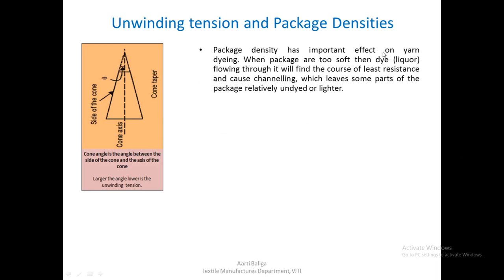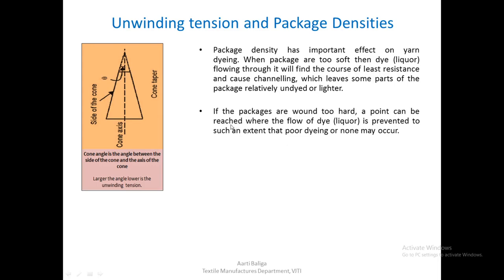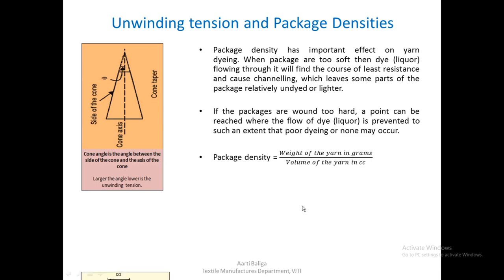Package density has an important effect on yarn dyeing. When packages are too soft, dye flowing through it will find the path of least resistance, causing channeling which leaves some parts of the package relatively undyed or lighter. If the package is wound too hard, a point will be reached where dye liquor is prevented from penetrating and we will have poor dyeing. Package density is calculated as weight of the yarn in grams divided by the volume of the yarn in cc.